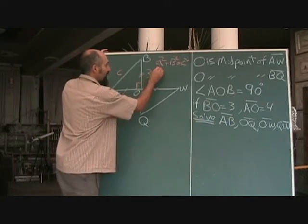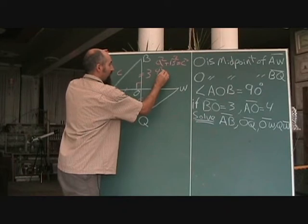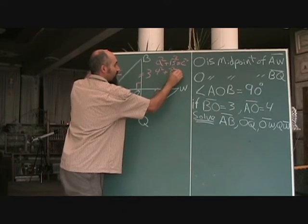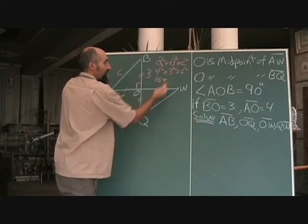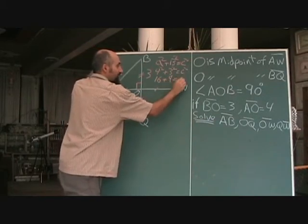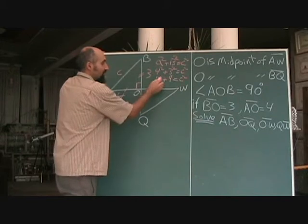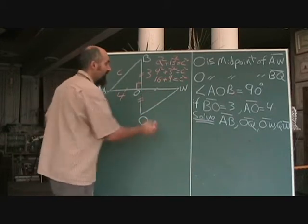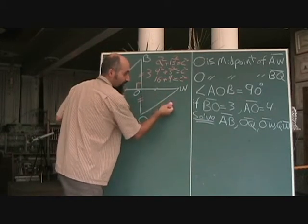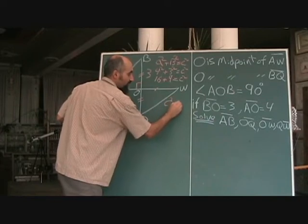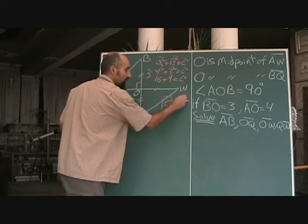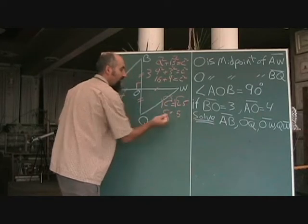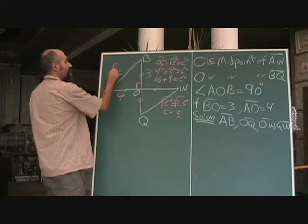So right now we can solve for this. Let's take a look. This becomes 4 squared plus 3 squared is equal to C squared. Now 4 squared is 16 plus 3 squared is 9 is equal to C squared. 16 plus 9 is 25. So C squared is equal to 25. And to get C by itself, you do the opposite of squared, which is square root. So C is equal to 5. So we just solved for this guy, 5.